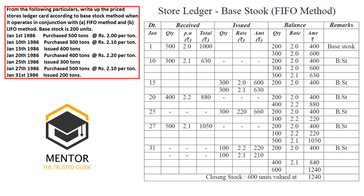On 20th January, 400 units are purchased at 2.2 per unit (880 rupees). The balance shows base stock of 200 units at 2 rupees (400 rupees) kept as usual, and the latest purchase of 400 units at 2.2 (880 rupees). We then issue 300 units out of the 400 units available for issue — excluding base stock — at 2.2 per unit, totalling 660 rupees.